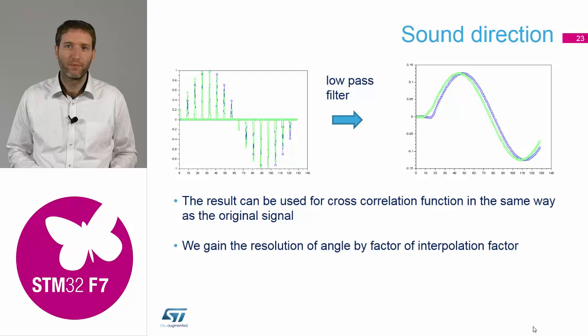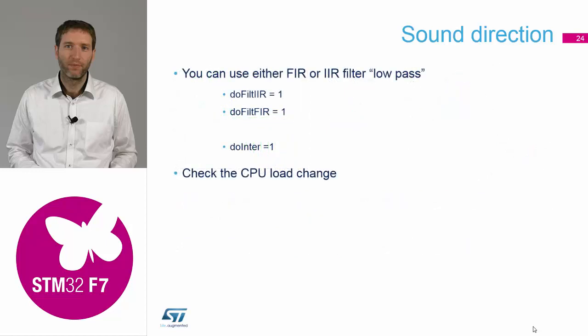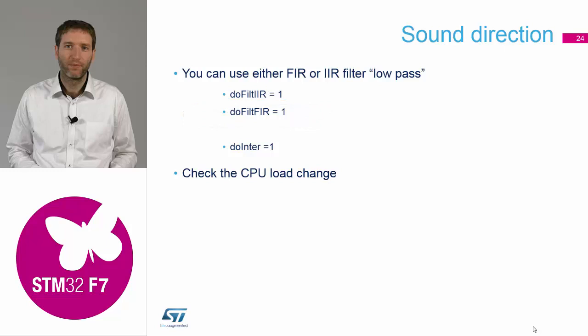This is implemented in our example as well. You just need to first set the interpolation flag to one and use one of the filters — the third filter is better because it's much easier, though it works with both, but use only one at a time. Enabling the do-interpolation flag together with one filter and the correlation should give you a delay resolution of plus or minus four. So you need to have three flags enabled: filtering, interpolation, and correlation — three DSP operations one after another.